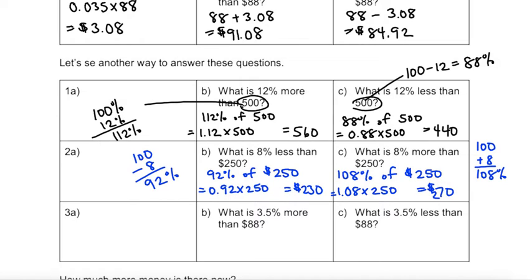And the last example, 3.5% more. That's the same as taking 103.5% of $88. So you see that I've skipped this step already. It's the same as finding 1.035 times 88, which is $91.08.